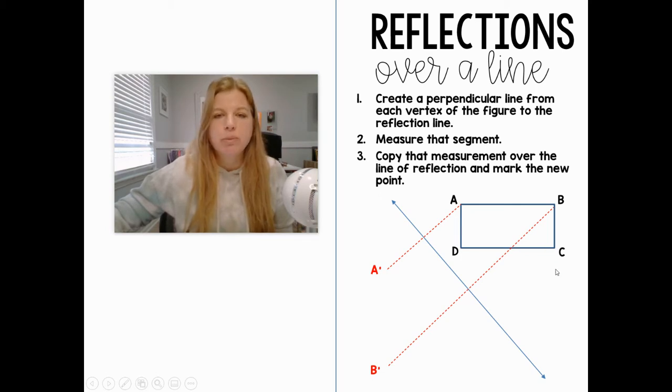Same with C. I'm going to take this point, construct a perpendicular line, measure the length from C to this line, and copy that same distance. That's where C prime is. Then do the same with D prime. Once I have my four points of my four primes, I can connect them, and that's what the reflection would look like.